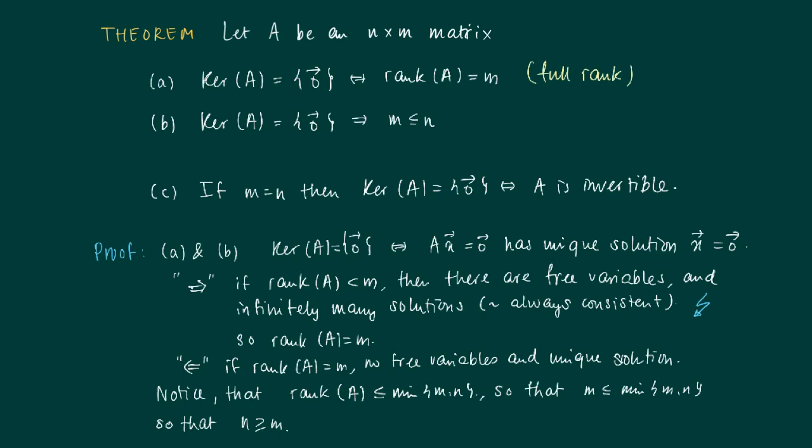How do we derive C? C is easily proved since we have m is n. So if we calculate the ref of A, we would obtain the identity matrix, and if we obtain the identity matrix, A is invertible.